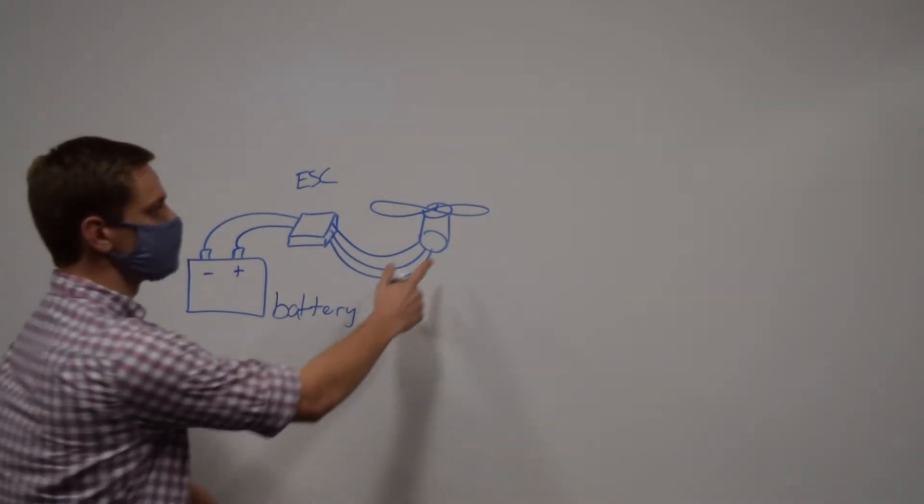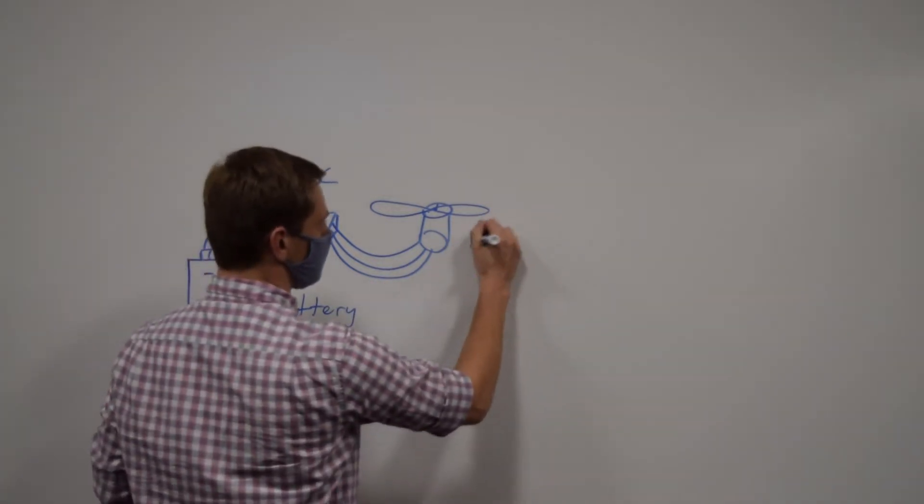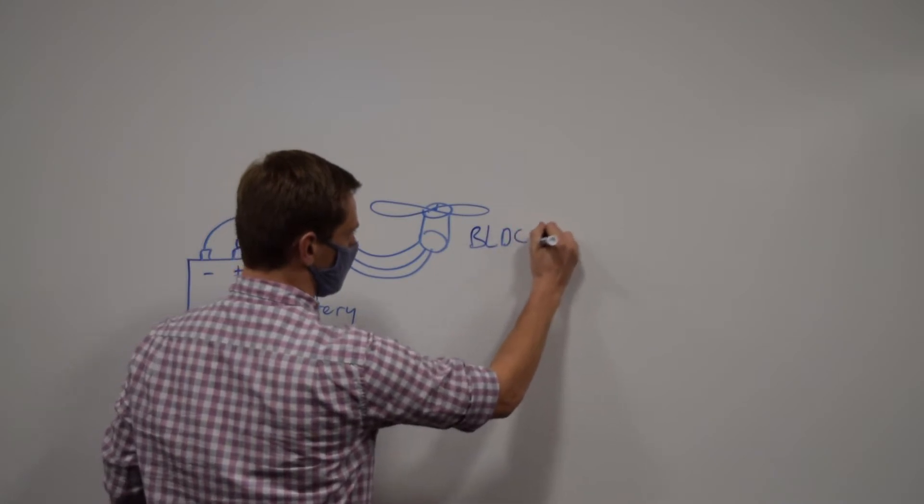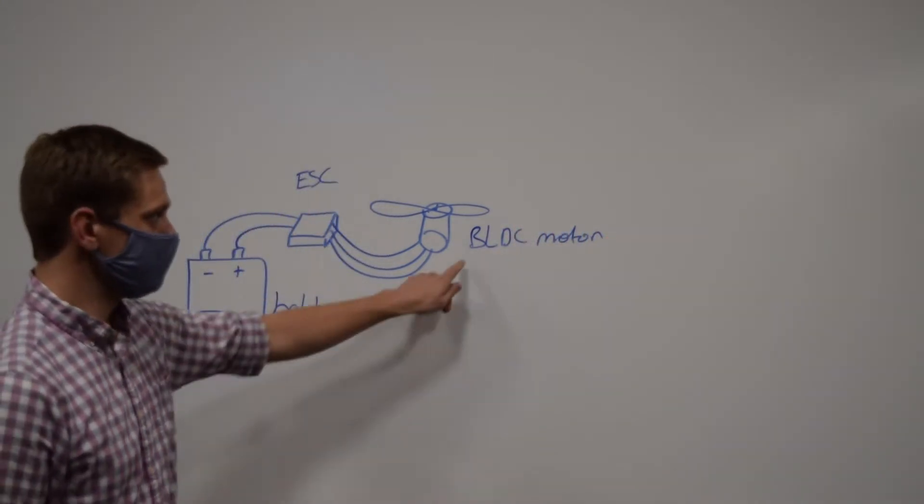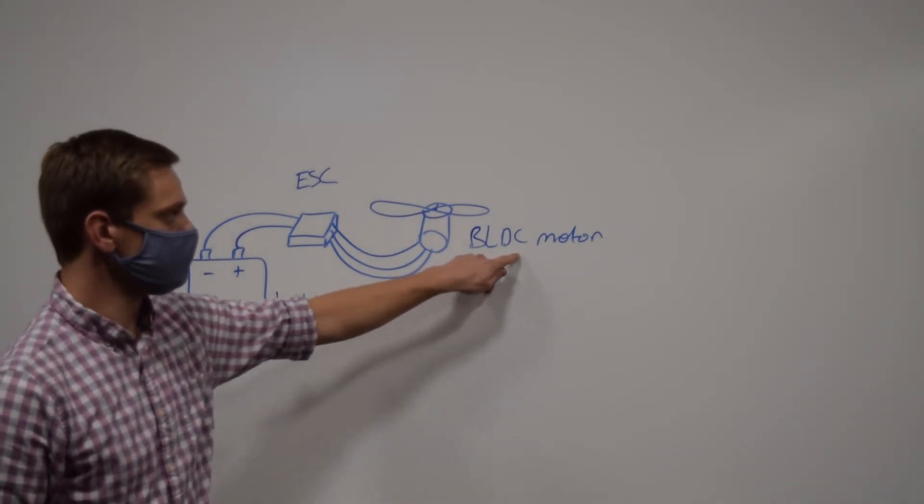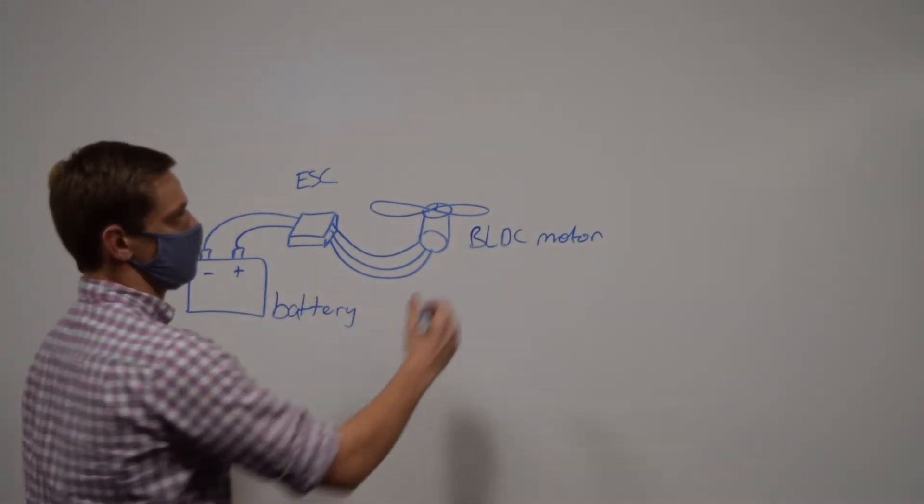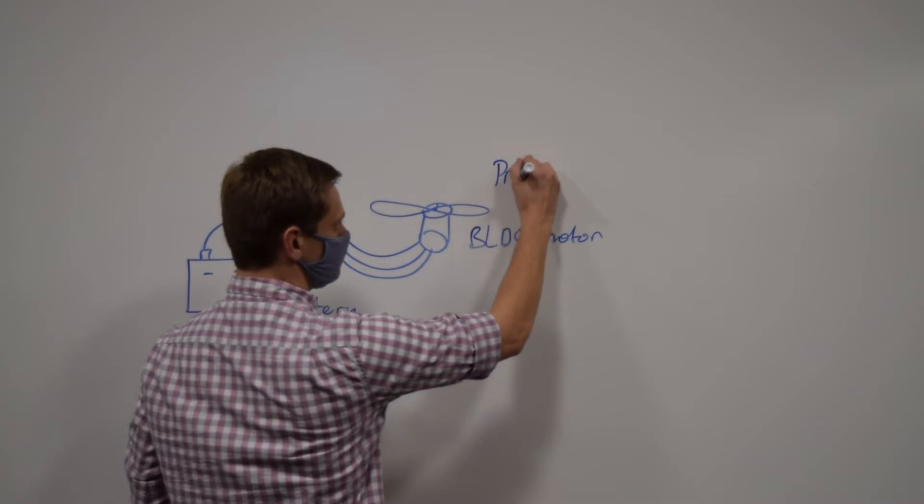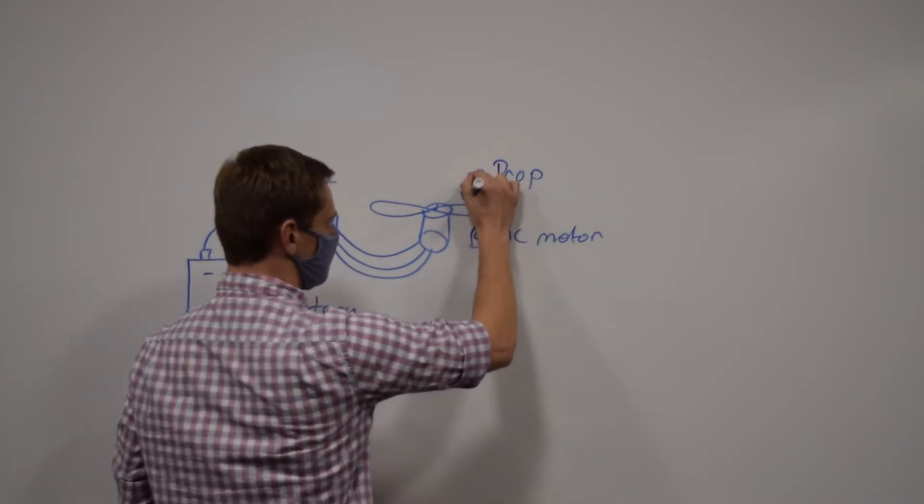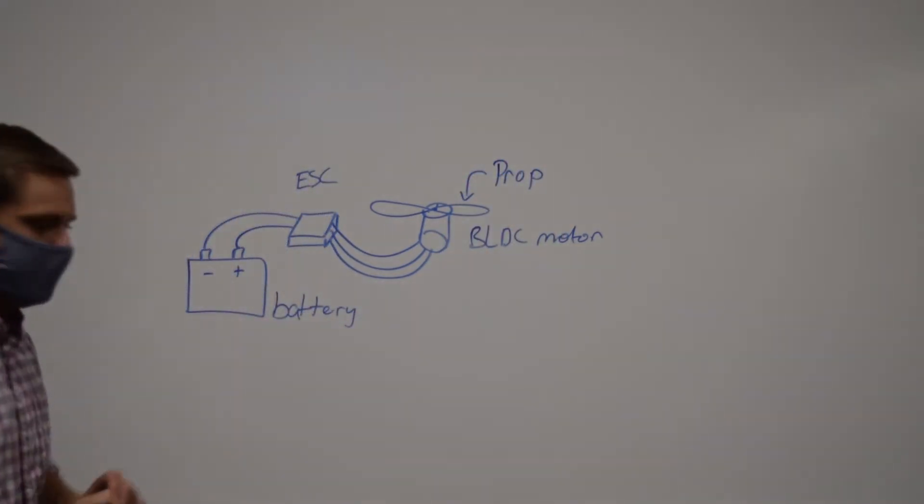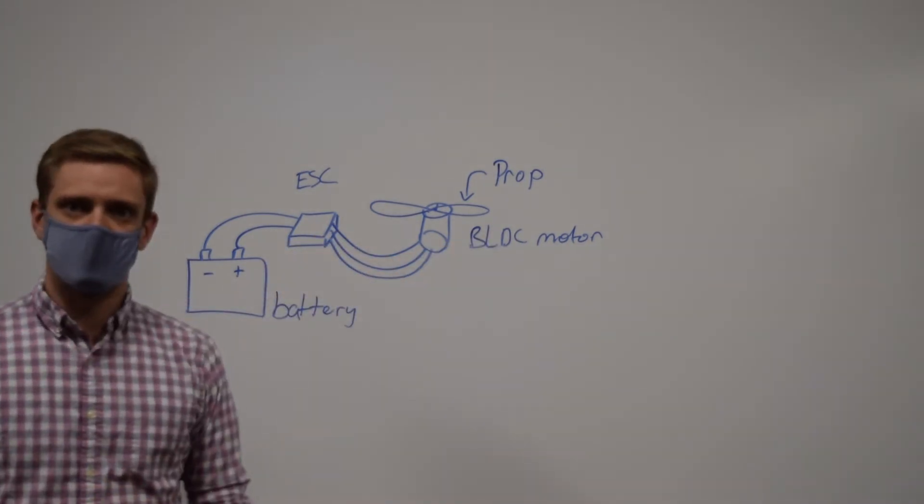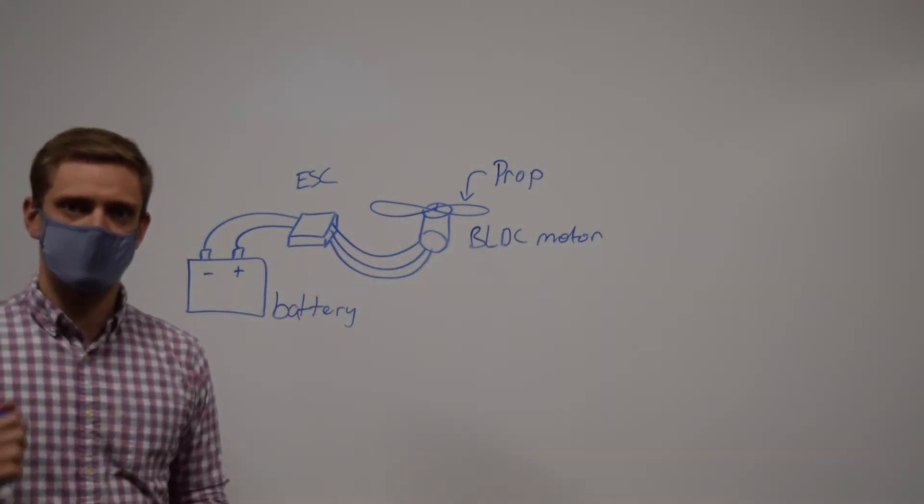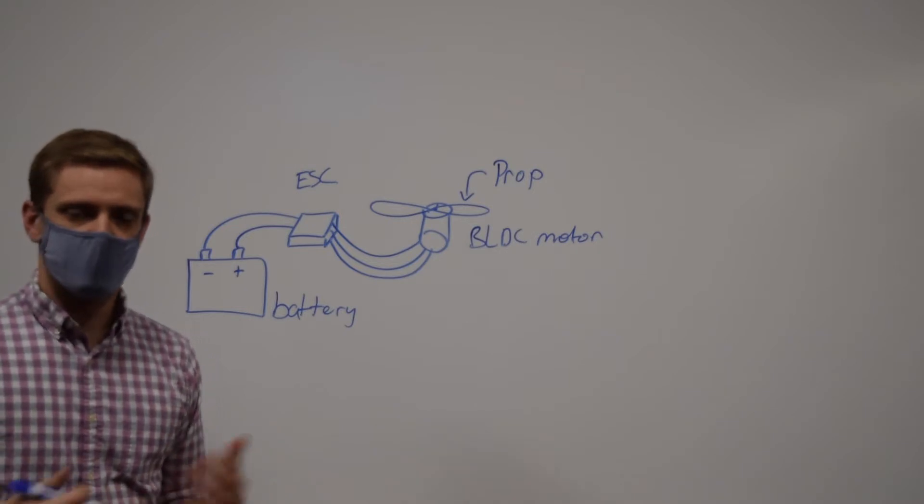You have your brushless motor, you'll see that abbreviated a lot. BLDC means brushless DC motor, direct current, and then you have your propeller. Each of these are different variables that account for how much thrust that you'll be able to produce out of your system.